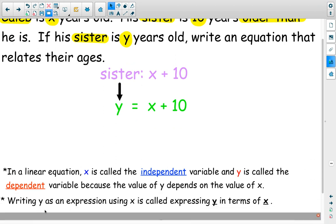Now, writing y as an expression using x is called expressing y in terms of x. We've been talking about our expressions in the previous chapter and we are familiar with in terms of x. That simply means that x is in one of your terms. But now we're saying express y in terms of x. So y equals x plus 10. It's a different way of expressing the value of y. They are the same. y is the same as x plus 10. His sister's age is the same as adding 10 to Caleb's age.